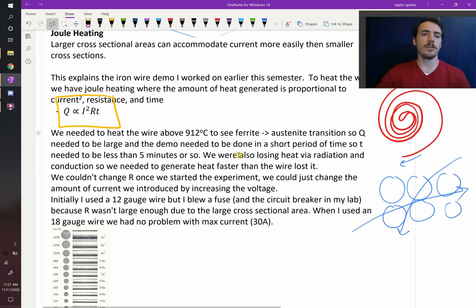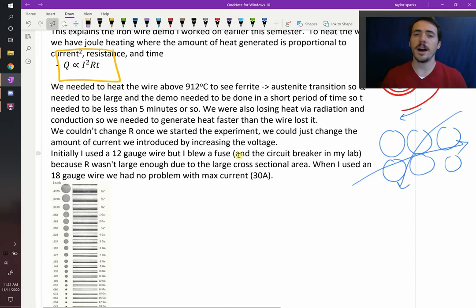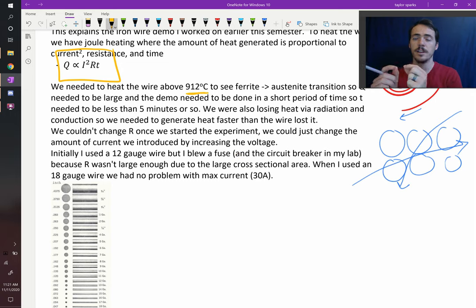Imagine this scenario. When I was doing the iron wire demo, I had to heat it up all the way to 912 degrees Celsius in order to see it switch from ferrite to austenite, which caused the wire to shrink. I couldn't wait all day for that to happen. The first couple of times that I tried that experiment, I hooked it up to my wire and I ended up tripping a breaker. Then you lose all your electricity and have to start over. I kept wondering what was going on.